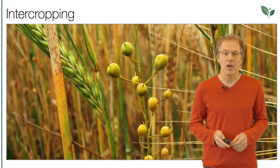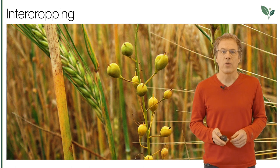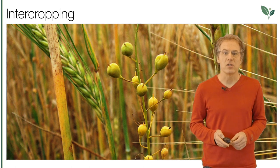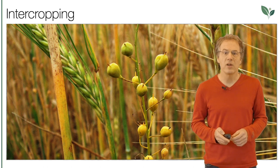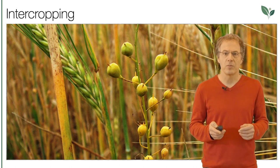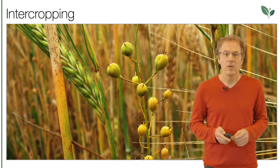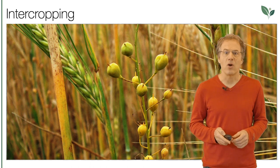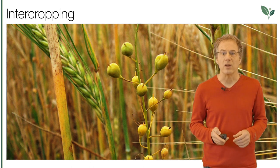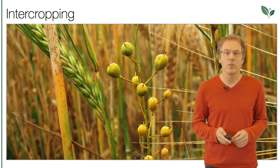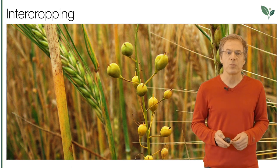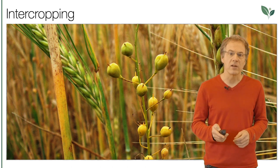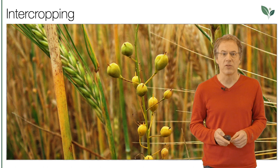Mixed crops are known from the home garden or vegetable cultivation, but this is also possible in the field and is increasingly being used — for example, with oil and grain. Widely used are combinations of nitrogen-fixing plants such as peas or lentils with grains.